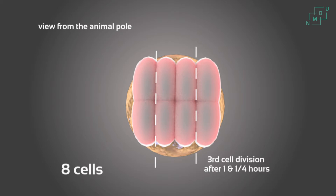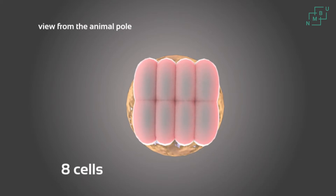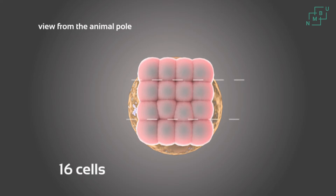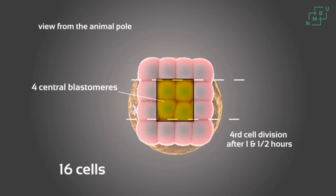So now the animal pole contains a 2x4 array of blastomeres. The fourth cleavage division occurs in two planes at right angle to the third and parallel to the second to produce a 4x4 array of cells. For the first time some cells are completely cleaved from the other cells — the four most central blastomeres. Note that these four cells are completely surrounded by 12 outer cells, the so-called marginal blastomeres, which are incompletely separated from the yolk.